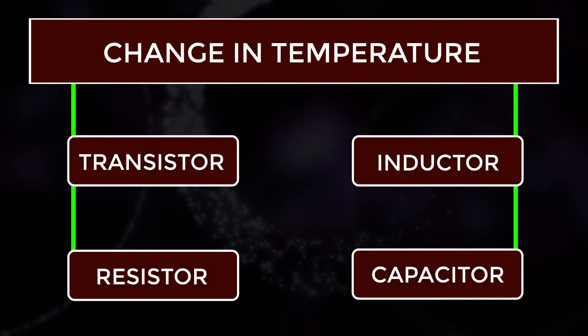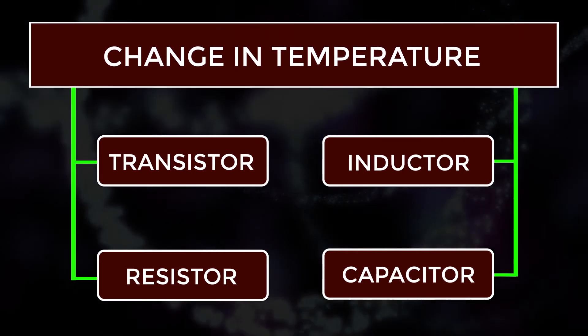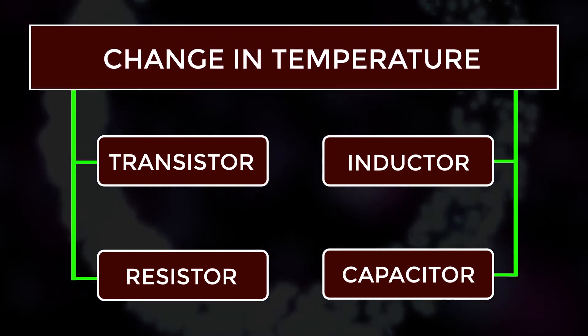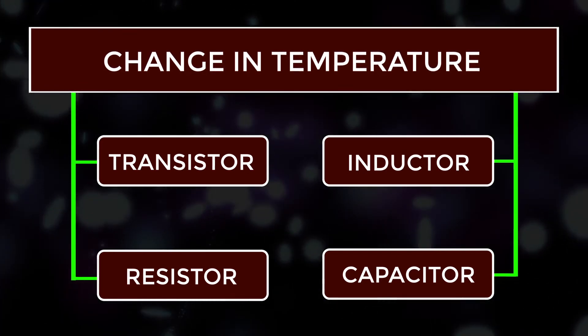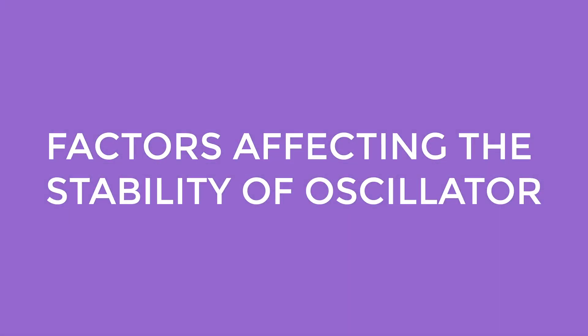Also due to change in temperature, the values of frequency dominating components like transistor, inductor, resistor and capacitor also change. Factors affecting the stability of oscillators.